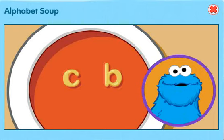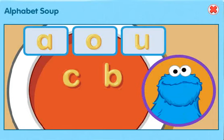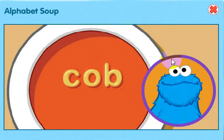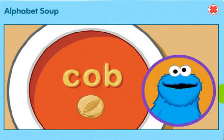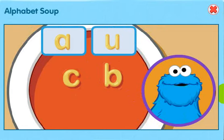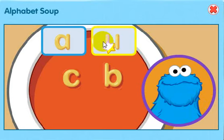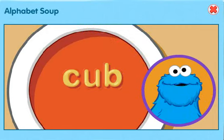Nom, nom, nom. Me see two letters there. But the word is missing an important middle letter noodle. Every letter makes a sound. Move the little star to the letter sound you want and click. O makes the O sound. That the word: cob. You make the O sound. That the word cob — cab!